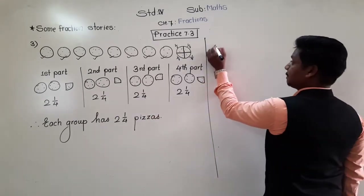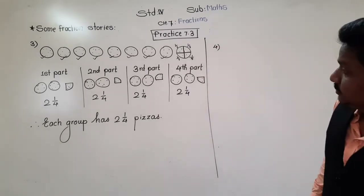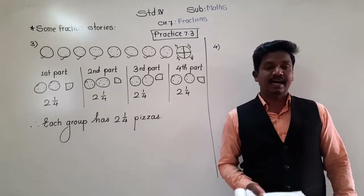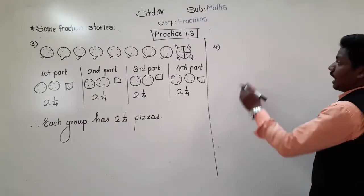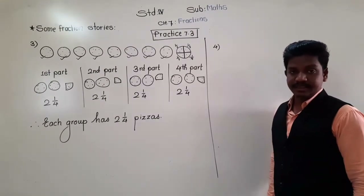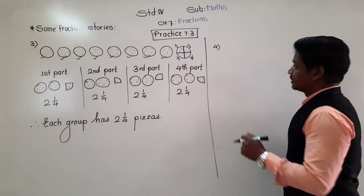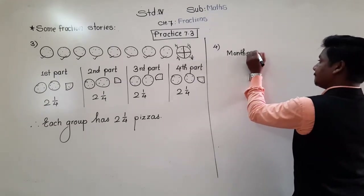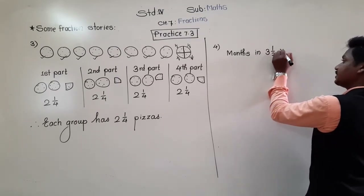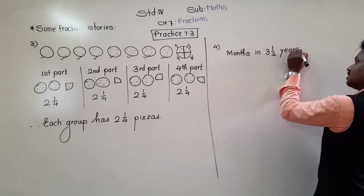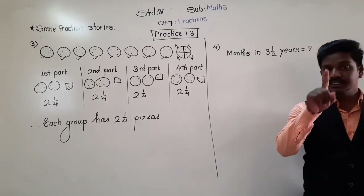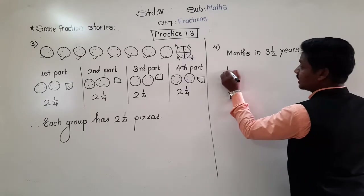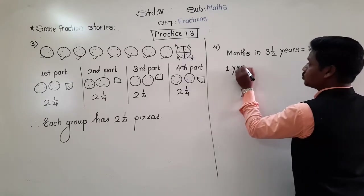Next, the fourth story: How many months are there in three and a half years? You know that one year has twelve months — January to December.